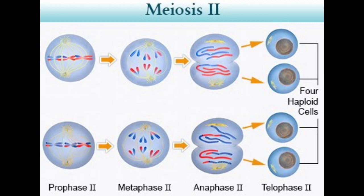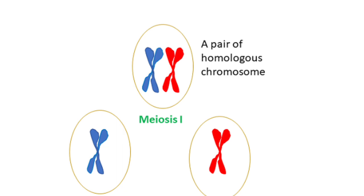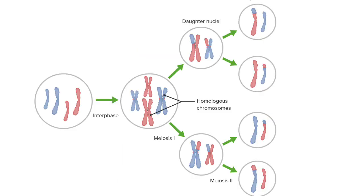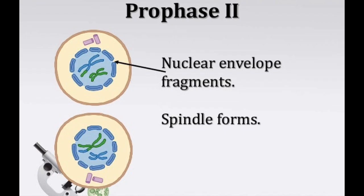After meiosis 1, each of the two daughter cells produced re-enters another stage of cell division called meiosis 2. Meiosis 2 also has prophase 2, metaphase 2, anaphase 2, and telophase 2. Prophase 2 is very similar to prophase 1 — the nuclear membrane disappears and the centrioles duplicate themselves.